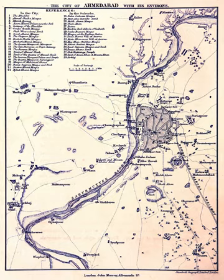1441 – Death of Sheikh Ahmed Khattu and construction of the historical Sarkej Roza begun. 1451 – Hauz-e-Qutb or Kankaria Lake constructed. 1453 – Daria Khan's tomb and dome constructed. 1454 – Construction of the shaking minarets of Sidi Bashir Mosque near Gomtipur. 1485 – Dada Harir Stepwell constructed. 1486 – Construction of city walls by Mehmud Begada. 1498 – Adalaj Stepwell with exquisite stone carving.